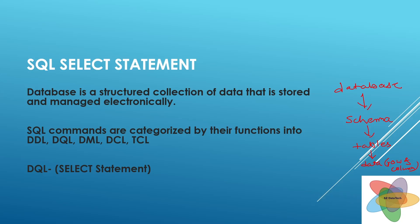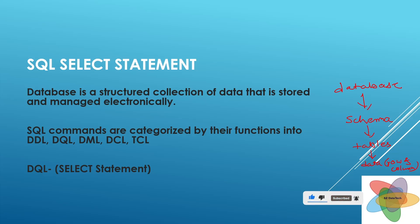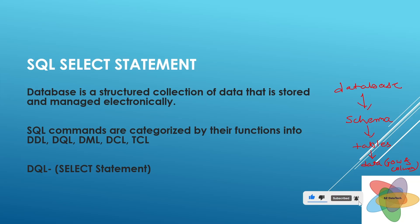Why SELECT statement? Because the main and most commonly used DQL command is SELECT. We use it to get records on specific criteria. We can use a SELECT query to get records with columns on the basis of required filters, orders, grouping, aggregations, or grouping with filters. And if there are multiple tables and we want records from all those tables, then we can use joins.